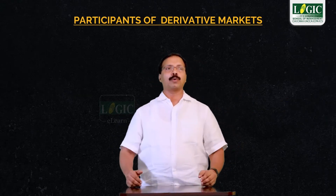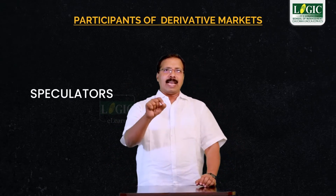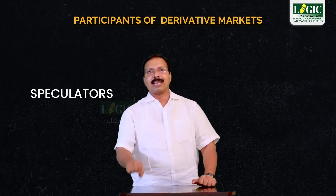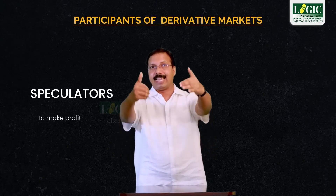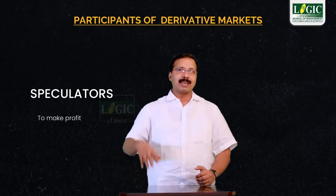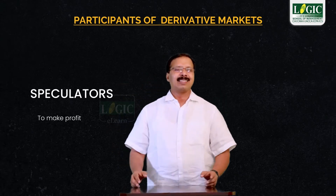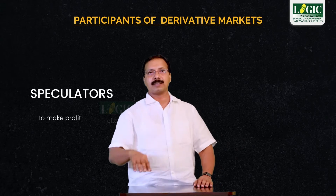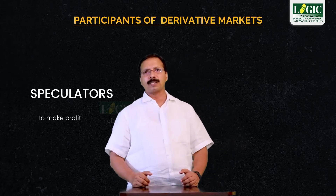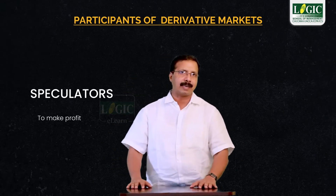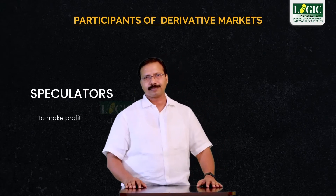Now we will learn about speculators. Who is a speculator? A speculator is one who buys or sells derivatives to make a profit. The aim of a speculator when he enters the derivative market is to make profit. They are never interested in the actual possession of the asset. A speculator wants to take advantage of price movements during times of volatility and make a huge amount of profit in the process.